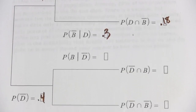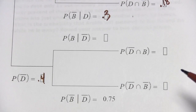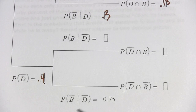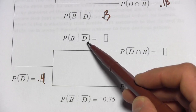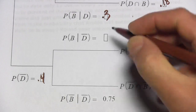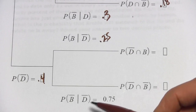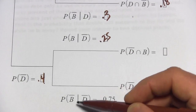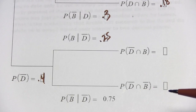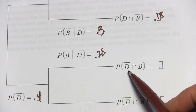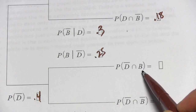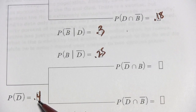Now let's go to the lower branch — these are the students not attending the discussion sessions regularly. We're told the probability of not getting a B or higher given that they're not going to the discussion sessions is 0.75. So the probability of getting a B or higher given that they're not going is 1 minus 0.75, which is 0.25. The intersection of not attending and getting a B or higher is 0.4 times 0.25, which equals 0.1.